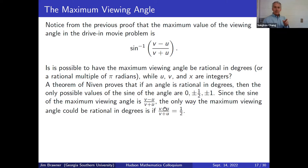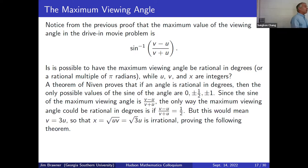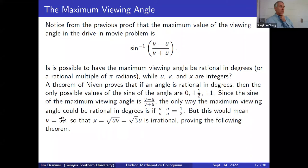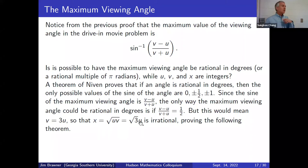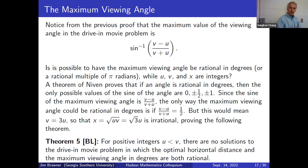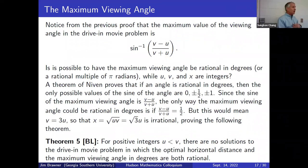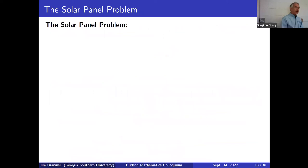But if v = 3u, then x = √(uv) = √(3u²) = u√3, which is irrational for any positive integer u. So the theorem is: if u and v are positive integers with u < v, there are no solutions to the drive-in movie problem in which the optimal horizontal distance x and the maximum viewing angle are both rational. You can't have both at once.